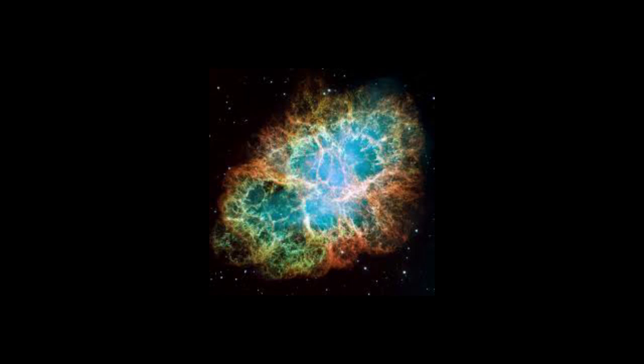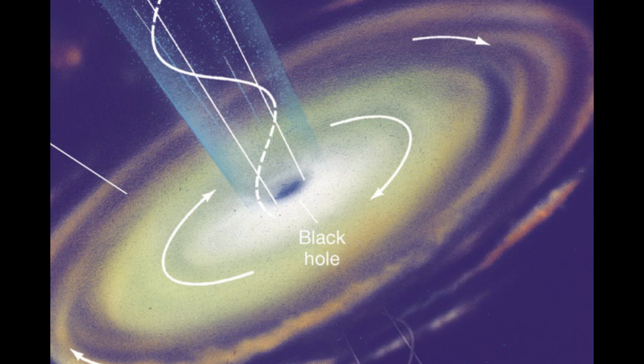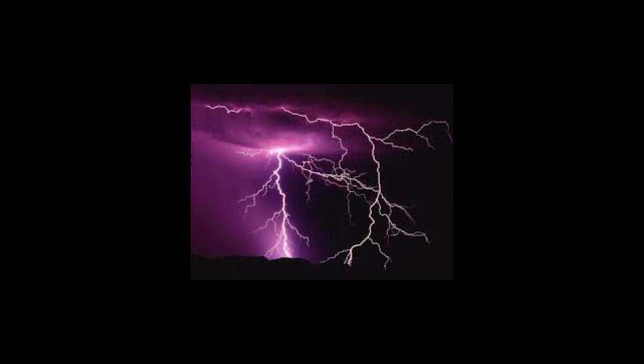Gamma rays are produced by the hottest and most energetic objects in the universe, such as neutron stars and pulsars, supernova explosions, and regions around black holes. On Earth, gamma waves are generated by nuclear explosions, lightning, and the less dramatic activity of radioactive decay.